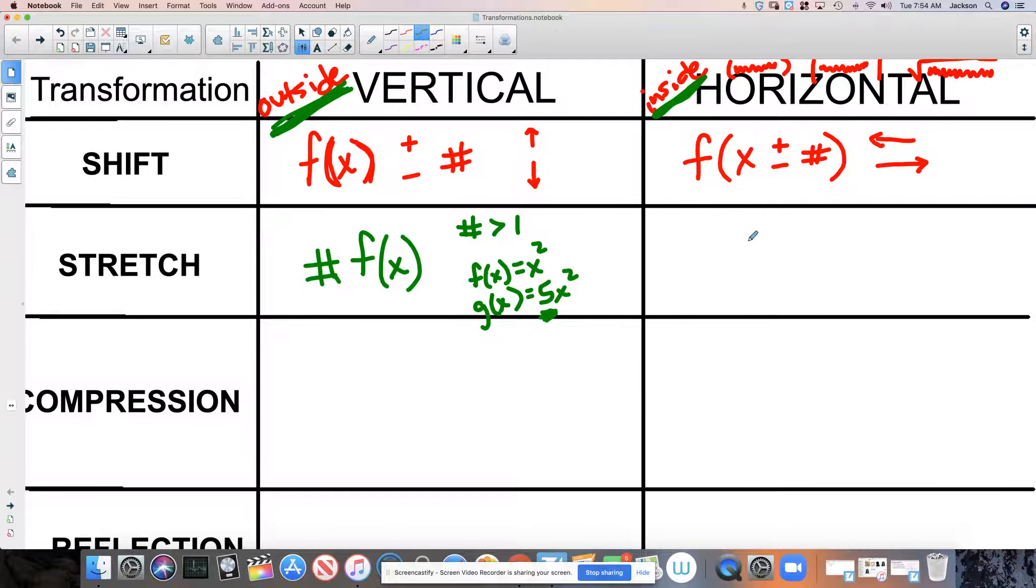We're going to multiply by a number, but it's not going to be the entire function. It's going to be multiplying x by a number. So notice the placement of where I'm putting this number symbol. If the number is being multiplied by the entire function, then that's a vertical stretch. If I multiply this number times only x, then that's a horizontal stretch.